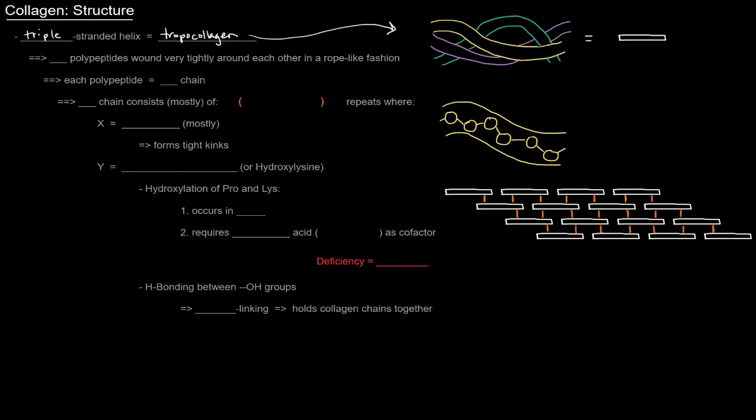So each of those different colored strands - this little yellow one, this purple one, and this sort of greenish one - they're all wrapped around each other, and they end up making some sort of rope. That's tropocollagen right there. Now, that's three polypeptides that are wound very tightly around each other in a rope-like fashion. And each of those, each polypeptide is an alpha chain.